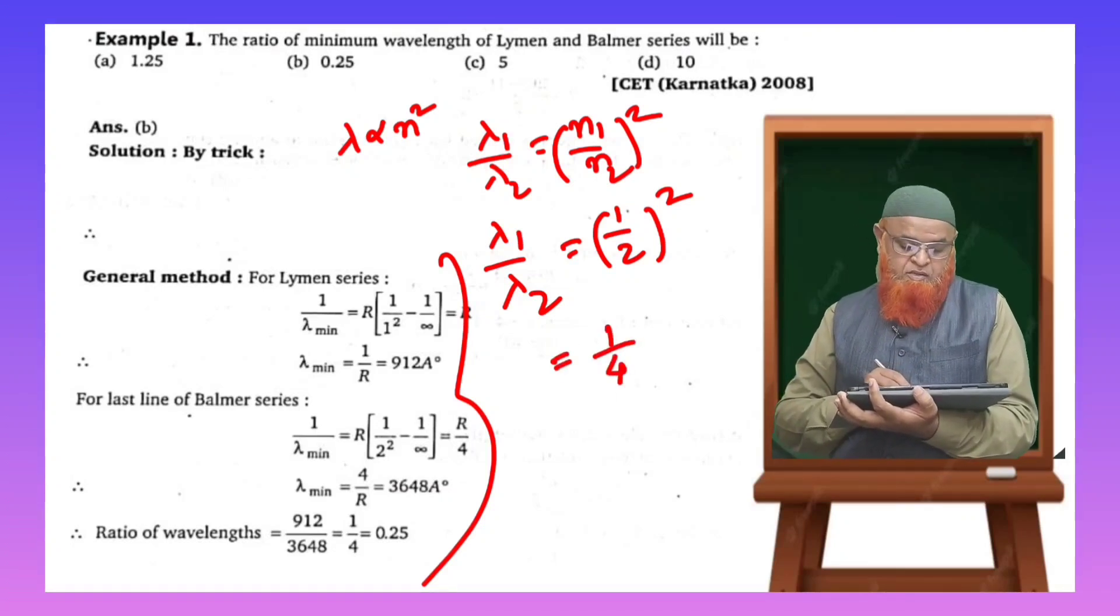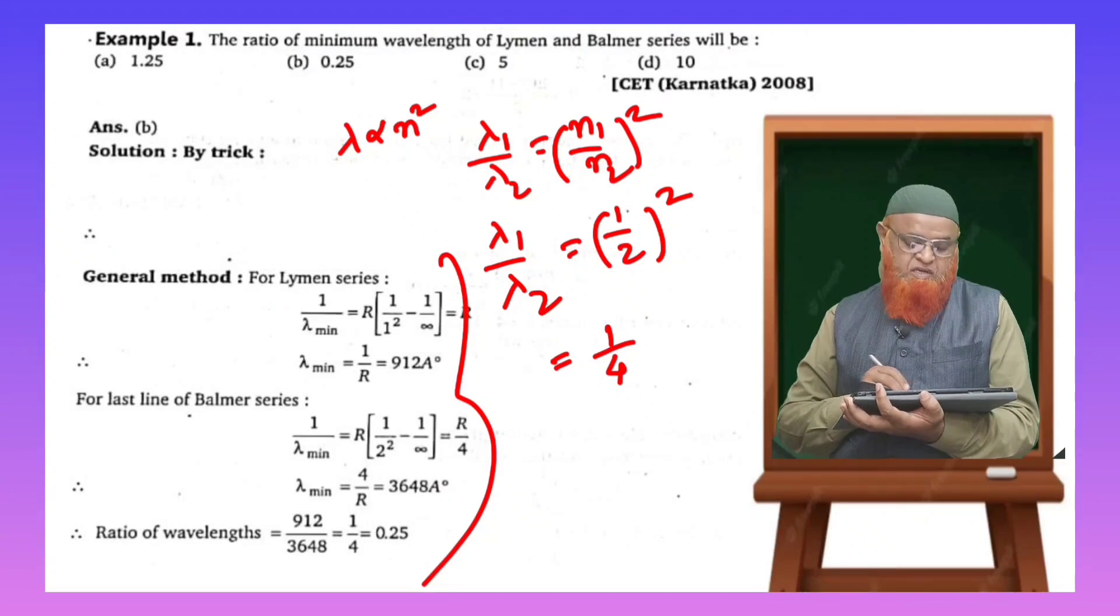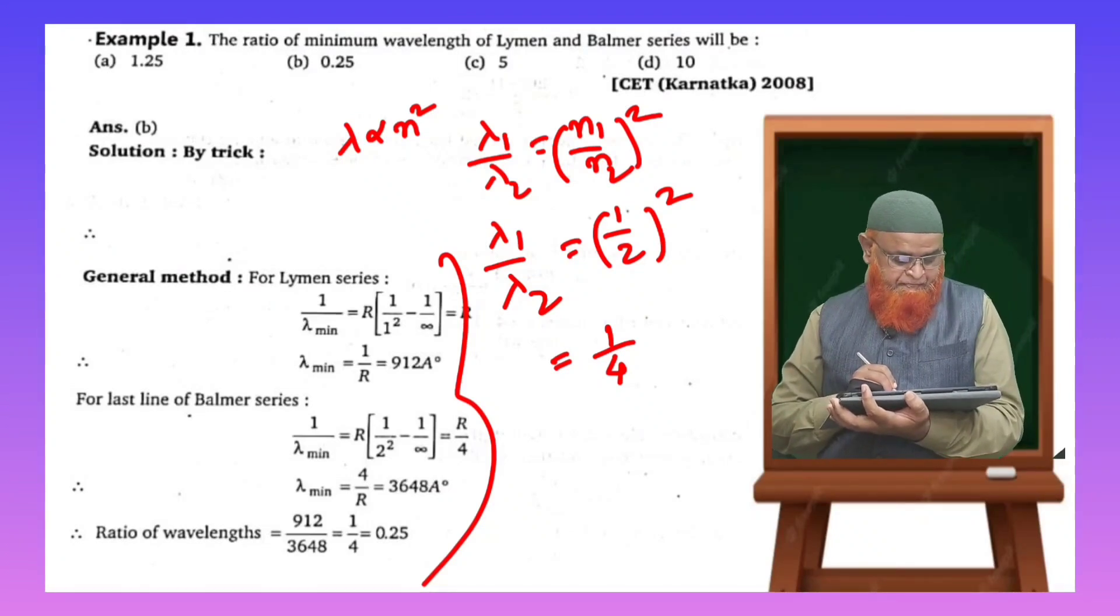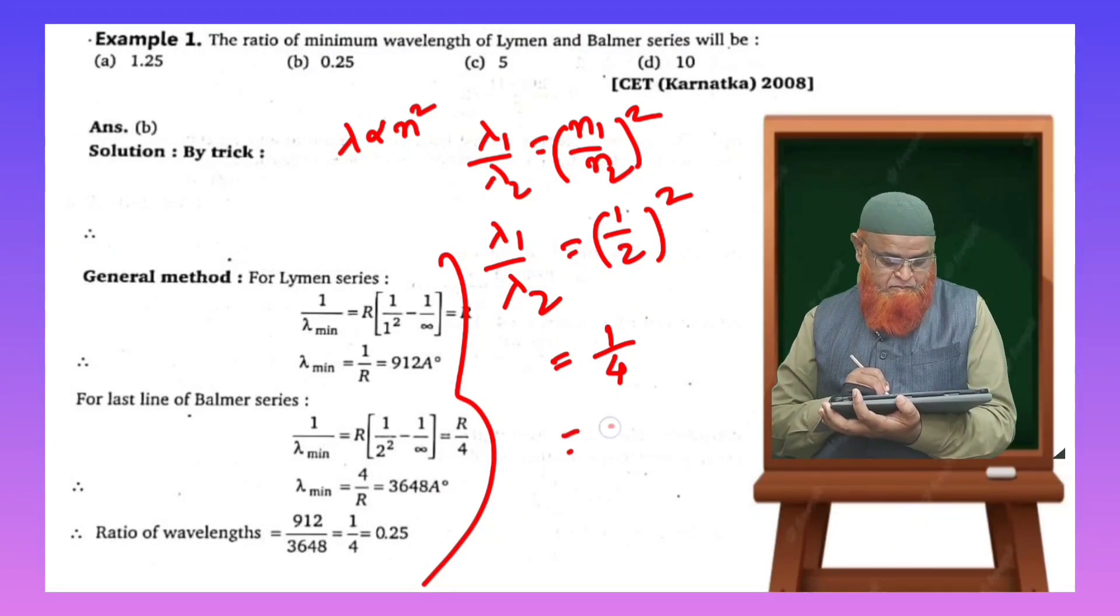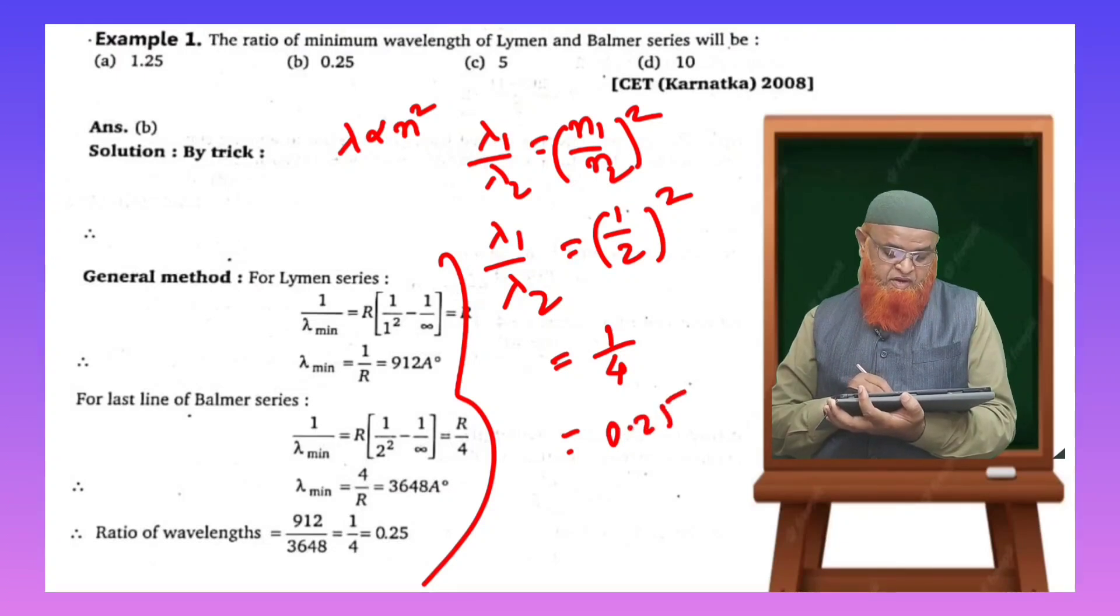The simple thing is you can just write 1 by 4, that's it. And this 1 by 4 can be written as 0.25, which is your answer. It's a wonderful short trick.